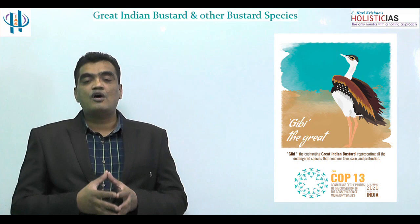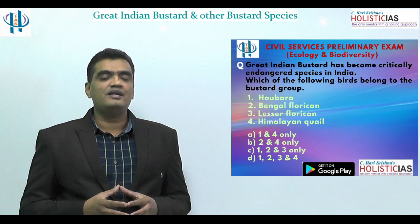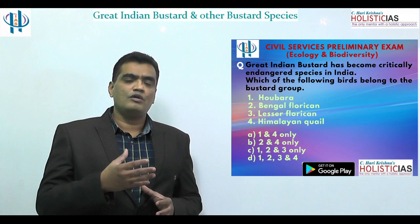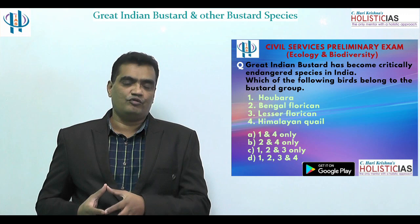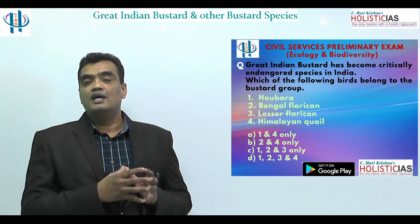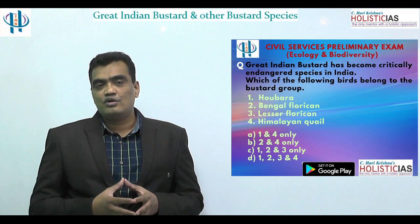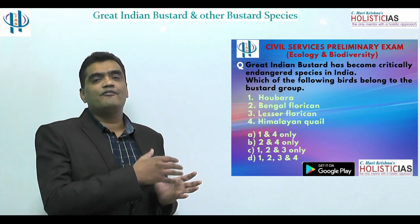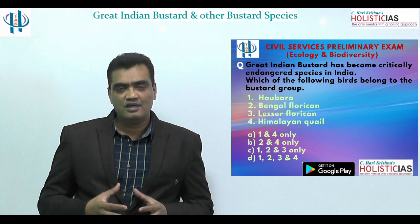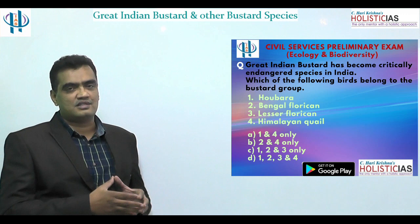Now, here is the question: the Great Indian Bustard has become critically endangered. Which of the following birds also belong to the bustard group? There are four birds: one — Haubara, two — Bengal Florican, three — Lesser Florican, and four — Himalayan Quail. The options are: (a) one and four, (b) two and four, (c) one, two, and three, or (d) one, two, three, and four. Try to get the answer while we go through the information.